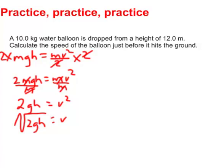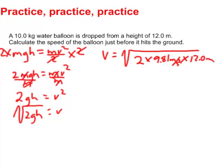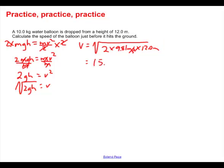I don't even have to worry about the mass because it cancels out. So the velocity of this object will be the square root of two times gravity, which is 9.81 meters per second squared, multiplied by the height, which is 12.0 meters. Getting out the calculator: the square root of 2 times 9.81 times 12 meters gives us 15.344... meters per second. Rounding to three significant digits, the answer is 15.3 meters per second.